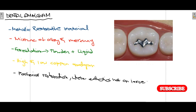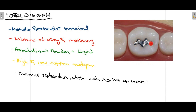Talking about dental amalgam first — you can see in this diagram a tooth where initially some dental caries was present, and when the dental caries was removed, amalgam restoration was placed. You can see the silverish color — this is your dental amalgam. Amalgam is a metallic restorative material; it is a mixture of alloy and mercury. Basically it is composed of two parts: the powder part and the liquid part, and when we mix these two, a dental amalgam is produced and then condensed into the cavity.